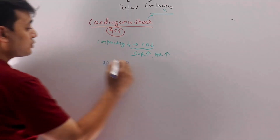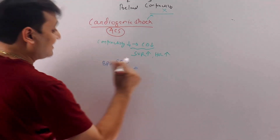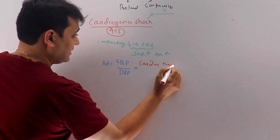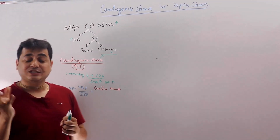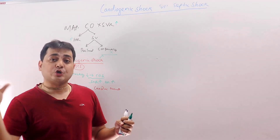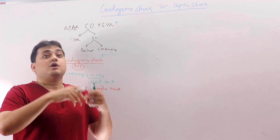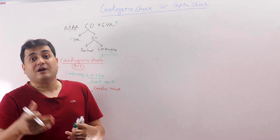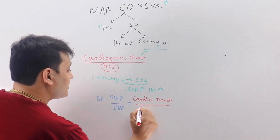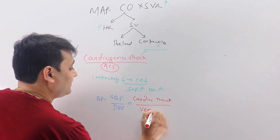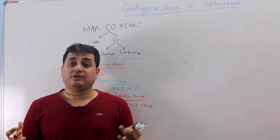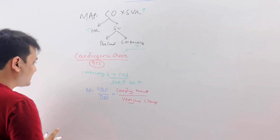Blood pressure is expressed as SBP over DBP. Systolic blood pressure depends upon the cardiac thrust — the force the left ventricle contracts against systemic vascular resistance. Diastolic blood pressure is determined by the venous caliber.